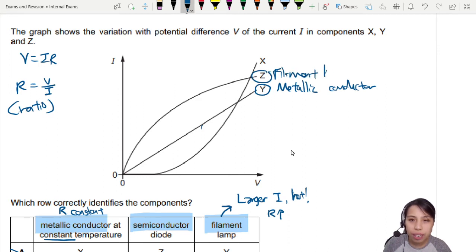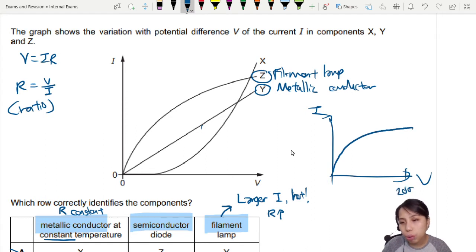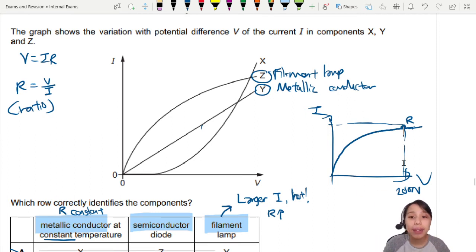Filament lamp, so this kind of IV shape. No matter how much you increase your voltage your current is pretty much stuck. You can increase to 2000 volts but your current is like I cannot already, too much resistance, I cannot increase anymore. That's what this graph is telling you. You can take the ratio at that point to find the resistance value. That's a filament lamp. Resistance increase means you will flatten out like that for IV.